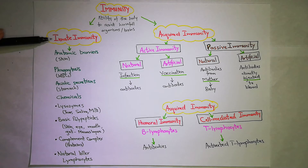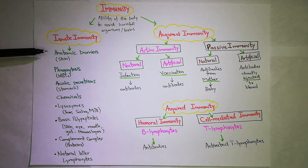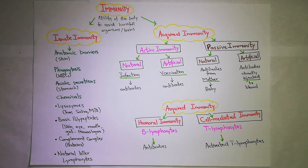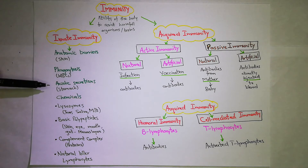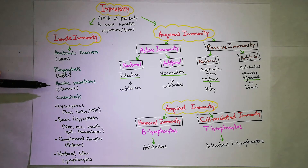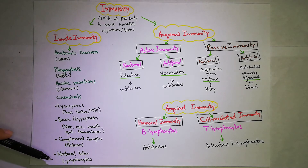In innate immunity we have natural barriers such as the skin. The skin blocks bacteria and viruses from outside. We also have WBCs in the body as part of innate immunity. Additionally, we have different types of chemicals: lysozymes, basic polypeptides, complement complex, and natural killer lymphocytes.